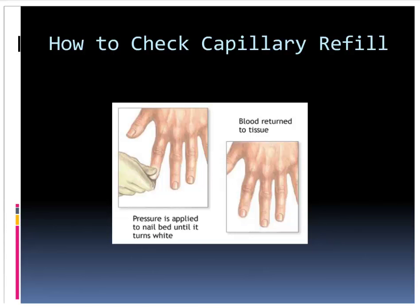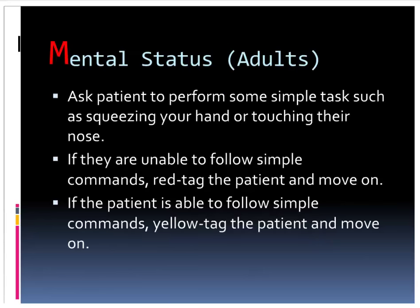To recap: we've done our walking wounded statement, our respirations, and now our perfusion. For mental status in adults, it's simple — ask them to perform a simple task. Personally, I like to ask the person their name. You can do this while assessing their breathing with your eyes and assessing their pulse with your hand — doing all at once. If they're unable to follow simple commands, tag the patient red and move along. If they can follow commands and passed all RPMs, they're a yellow patient since they weren't able to walk.